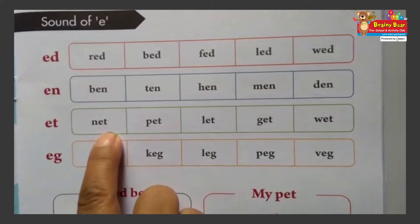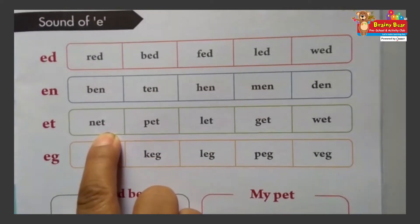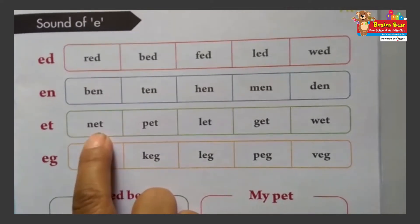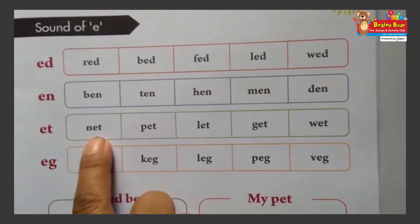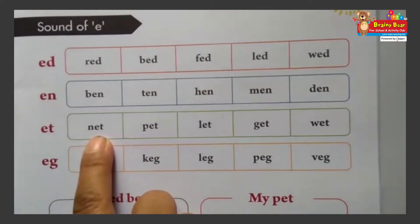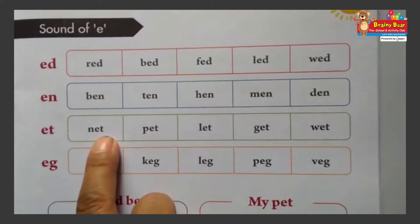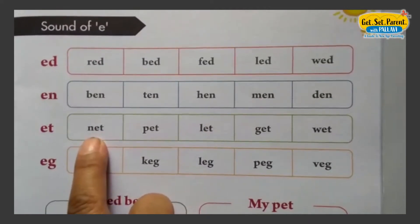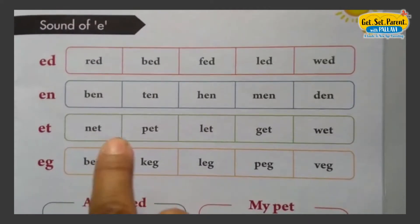N, E, T. Phonic of N: N. Phonic of E: E. Phonic of T: T. N-E-T.